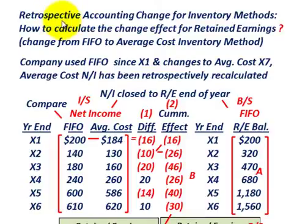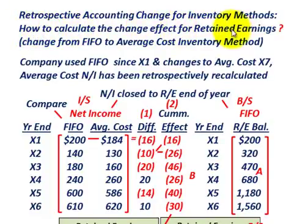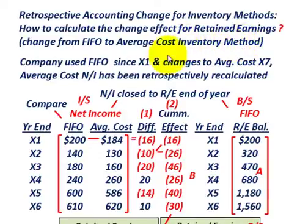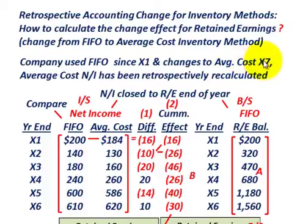In this problem, we're going to be looking at the retrospective accounting change for inventory methods. The question we have to answer is how to calculate the change effect on retained earnings. For example, we're going to change from the FIFO inventory method to the average cost inventory method. The company has used FIFO since year X1, but they're going to change over to average cost at the beginning of year X7.